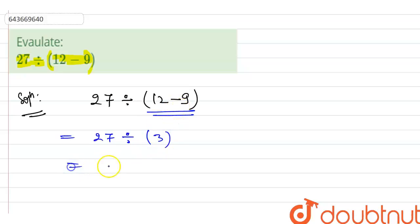Now we will break our bracket: 27 divided by 3, and it will be equal to...